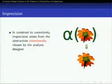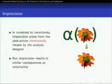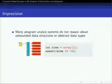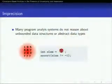Moving on to imprecision: at first glance, imprecision seems quite different from uncertainty, because imprecision arises from the abstraction chosen intentionally by the analysis designer. However, imprecision will have very similar consequences as uncertainty. For instance, if my program analysis doesn't integrate sophisticated shape analysis reasoning, then it will most likely end up smashing all elements of an unbounded data structure into a single summary node. If that's the case and I read a particular element out of this array, then I have to assume that this array read could result in any one of the possible values that I previously wrote to this array.